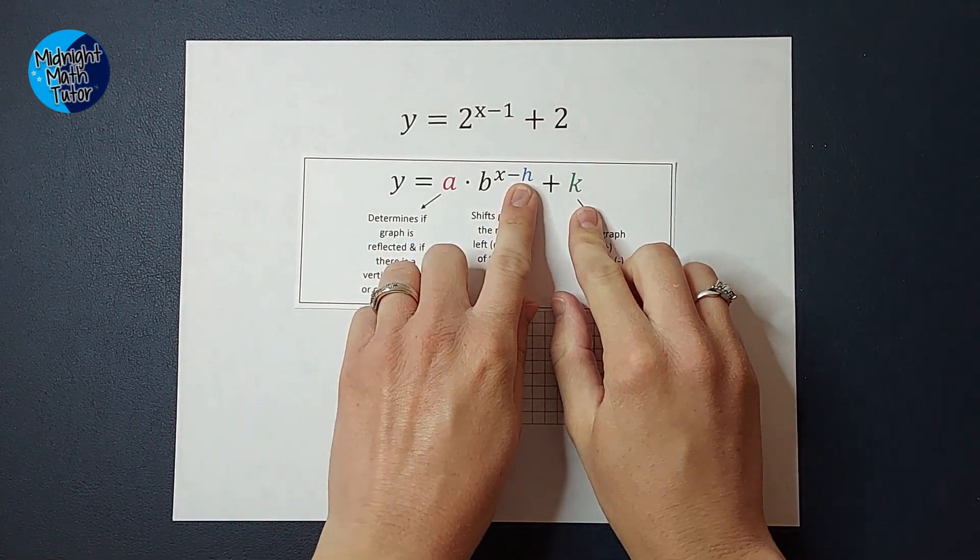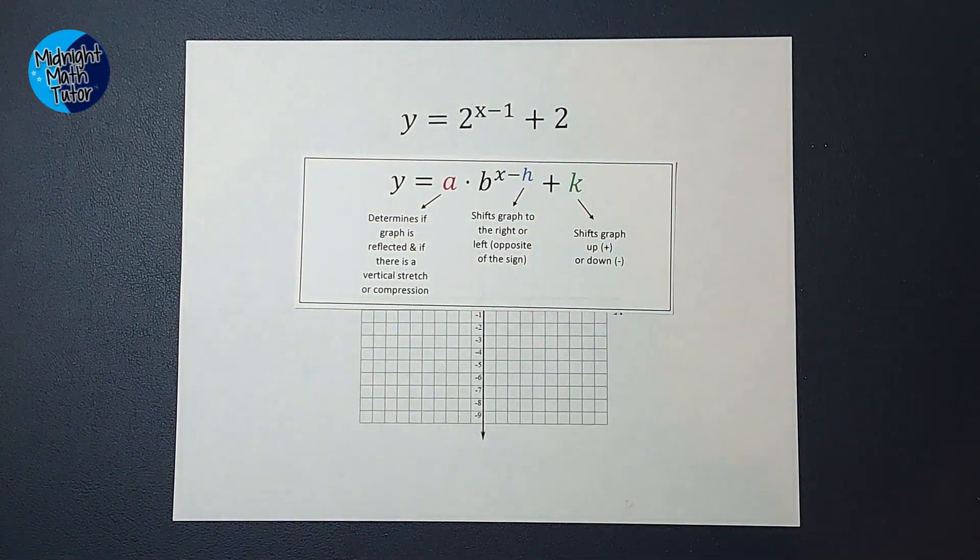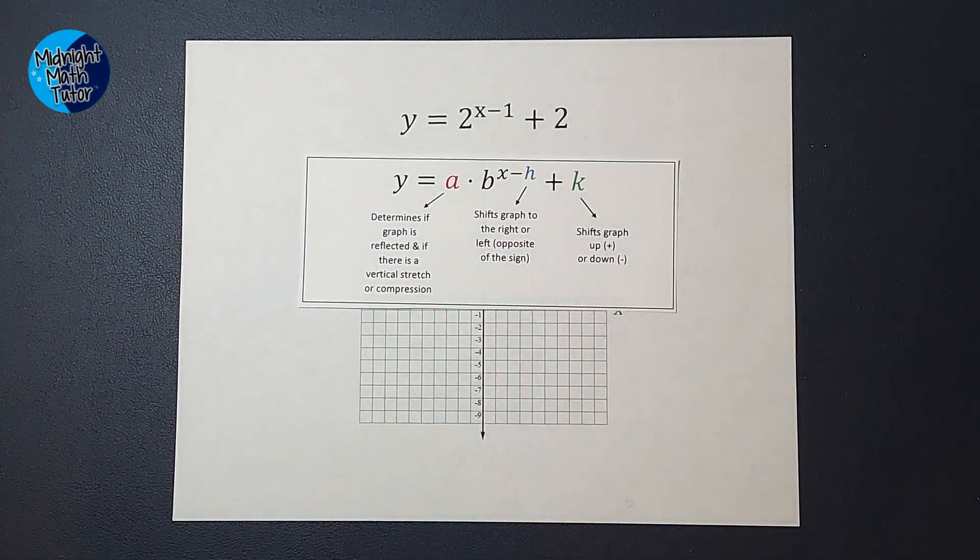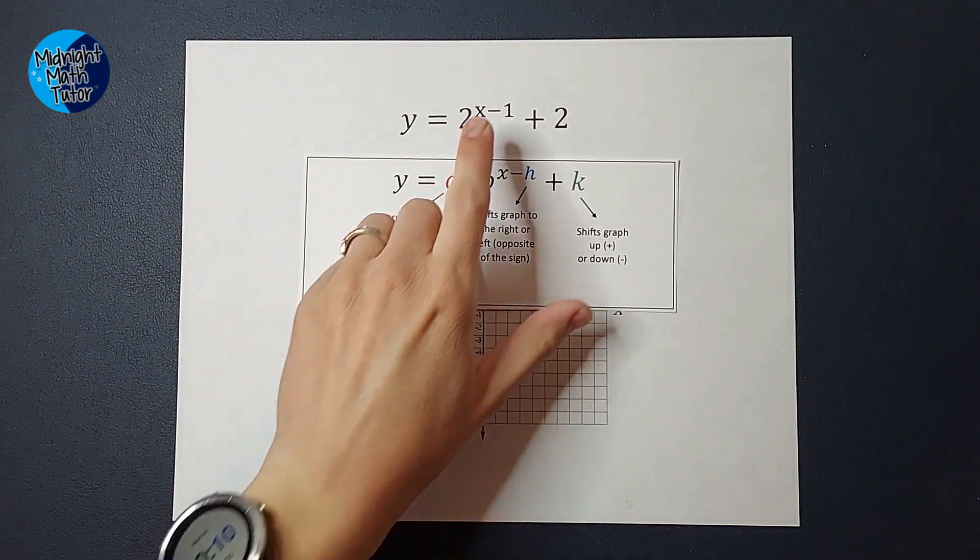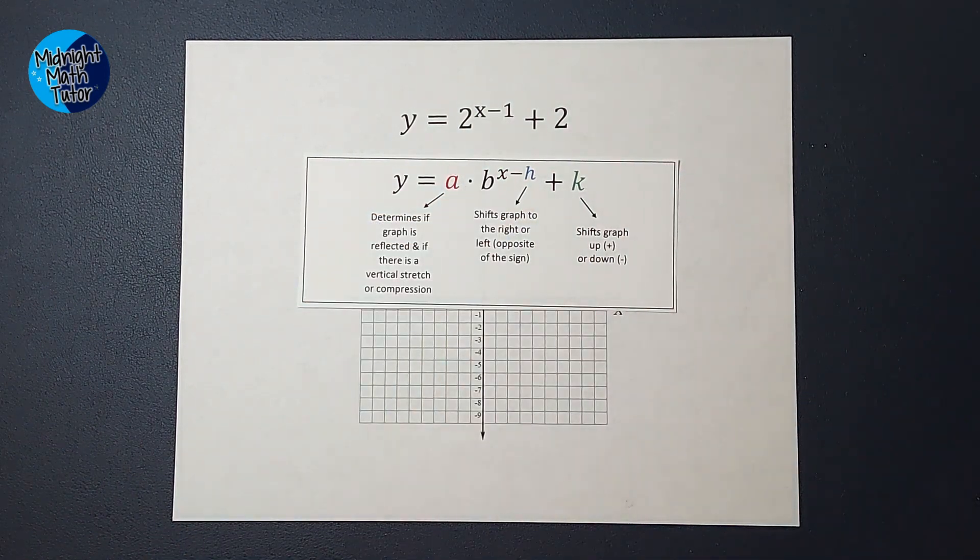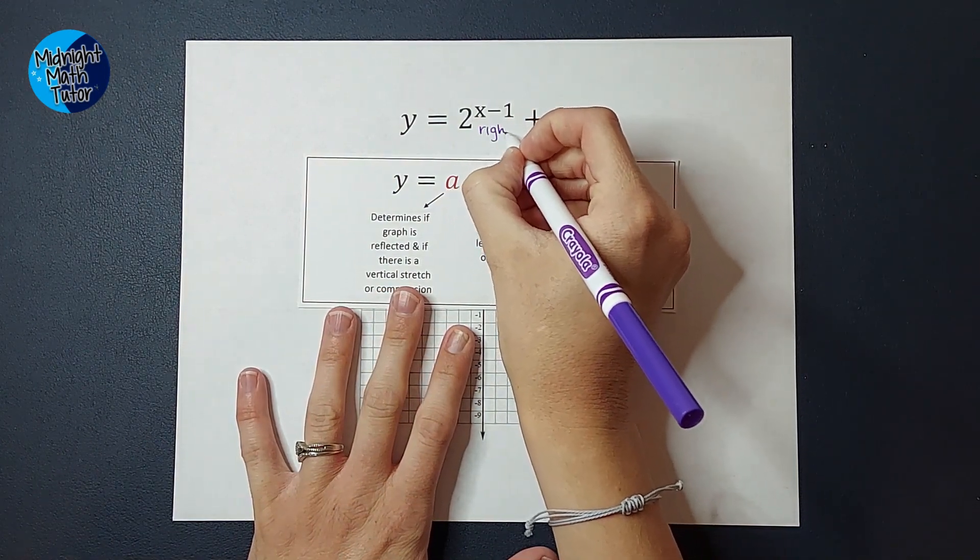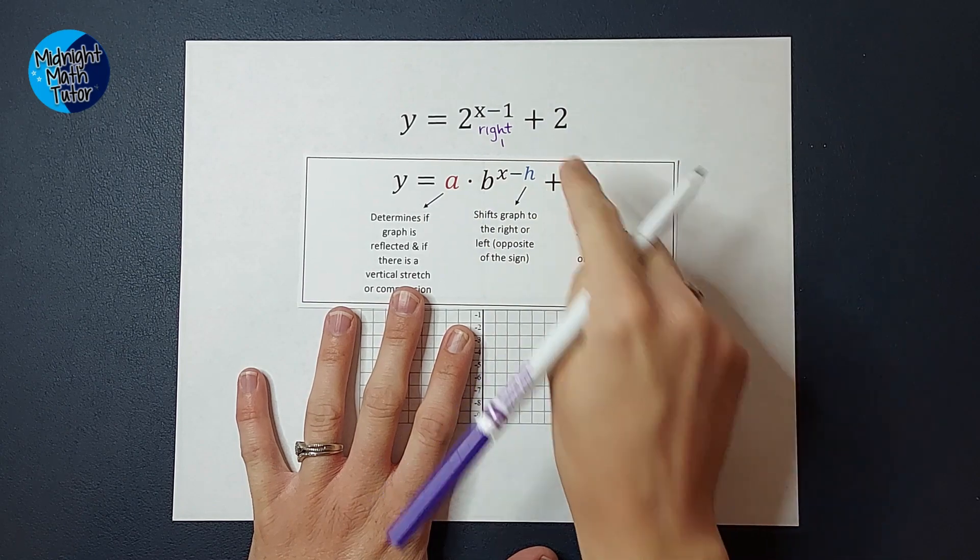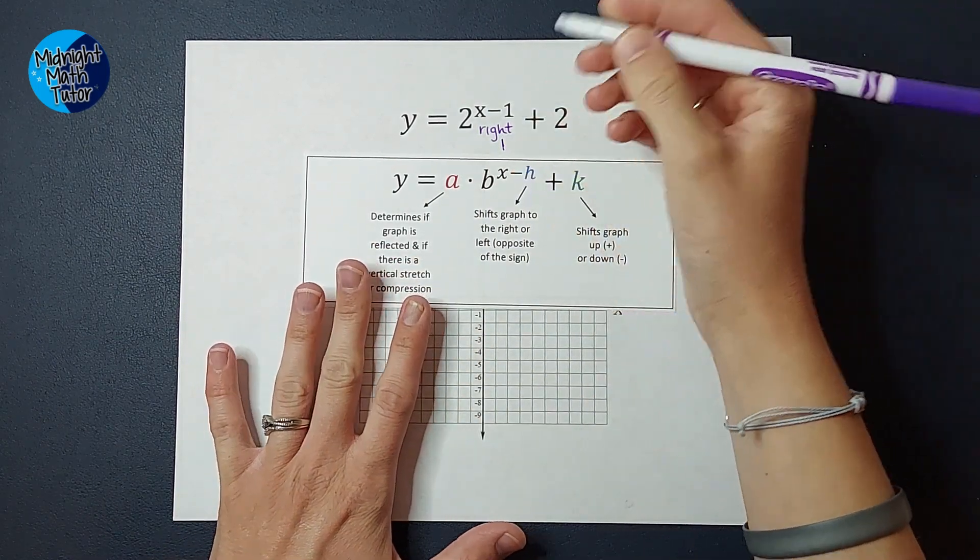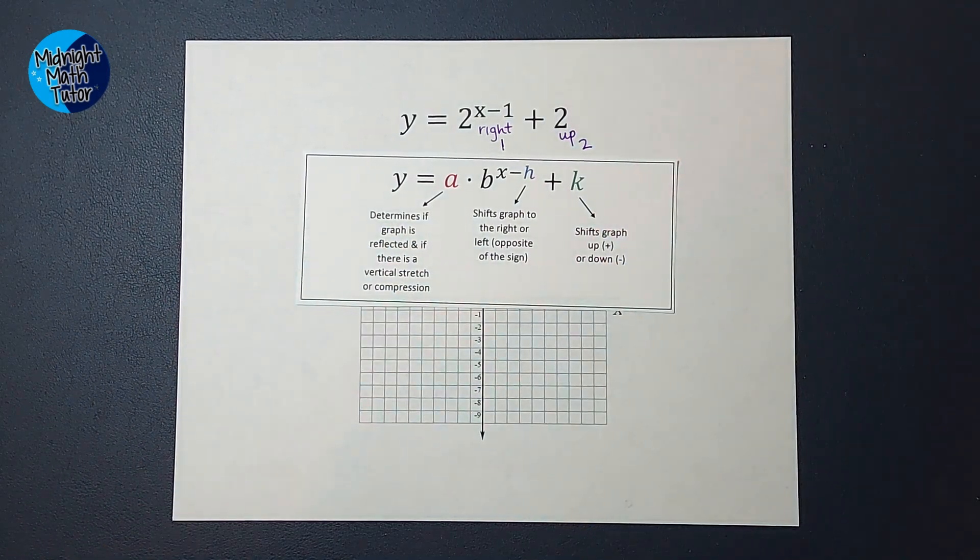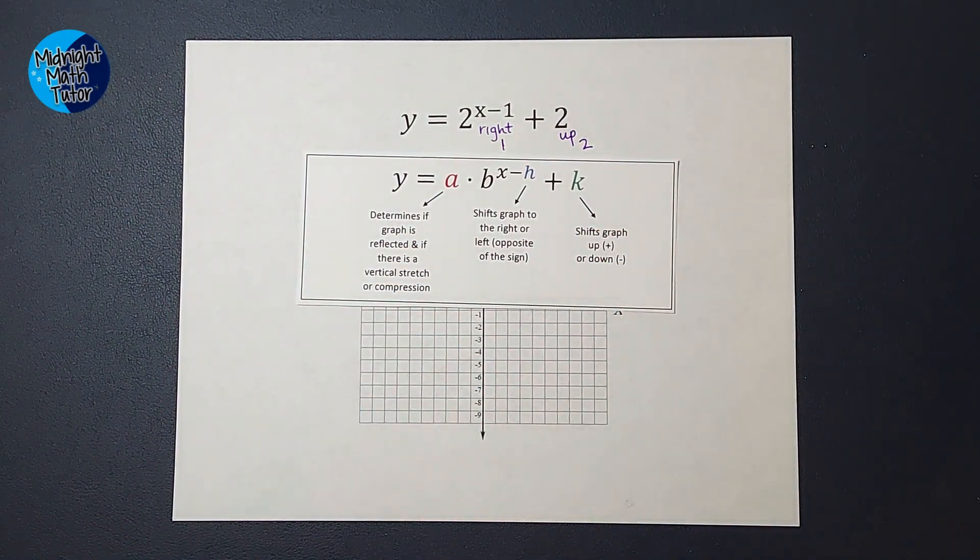Here you're probably used to, this number tells me how far my graph shifts to the right or left, opposite of the sign. This one tells me how much it shifts up or down with the sign. So this minus 1 here means my graph is going to shift to the right 1, and the plus 2 here tells me that my graph is going to shift up 2. So now we just need to figure out what that graph looks like that I'm going to be shifting.